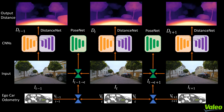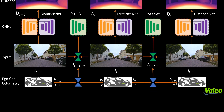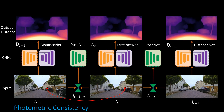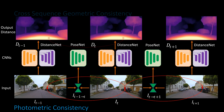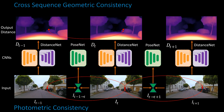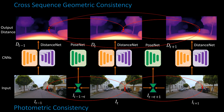By introducing scale awareness to the network, we can obtain metric distance maps as the output. This avoids scaling of the distance using LiDAR ground truth maps at test time, which mainly facilitates the practical use case for self-driving cars. Coming to the losses, we introduce a photometric error warped for both forward and backward sequences. More constraints are enforced by adding a cross-sequence consistency loss. The induced bundle adjustment framework jointly optimizes the camera poses within a sequence by increasing the baseline and providing additional constraints during training.